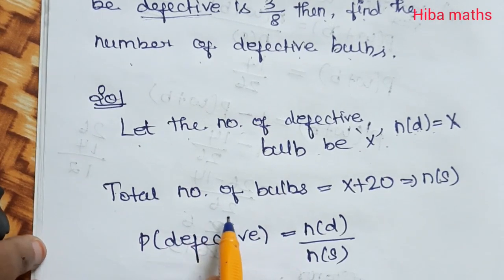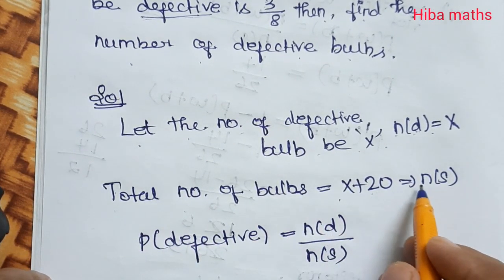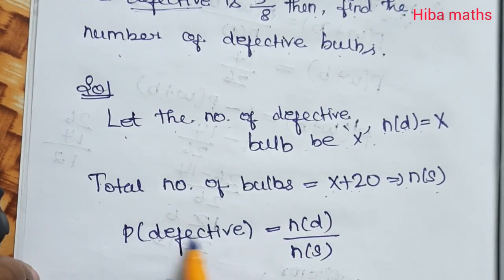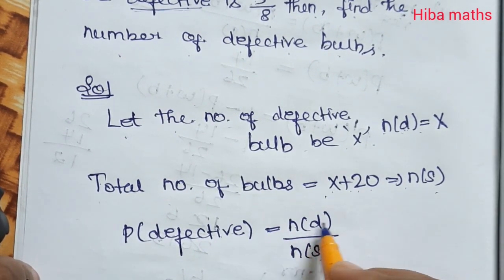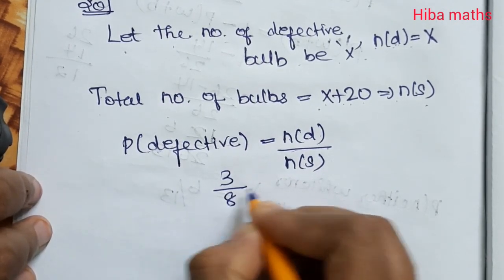Total number of bulbs is defective x plus non-defective 20, so x + 20 = n(s). The probability of defective is n(d) / n(s), but the probability of defective is already given as 3/8 in the question.